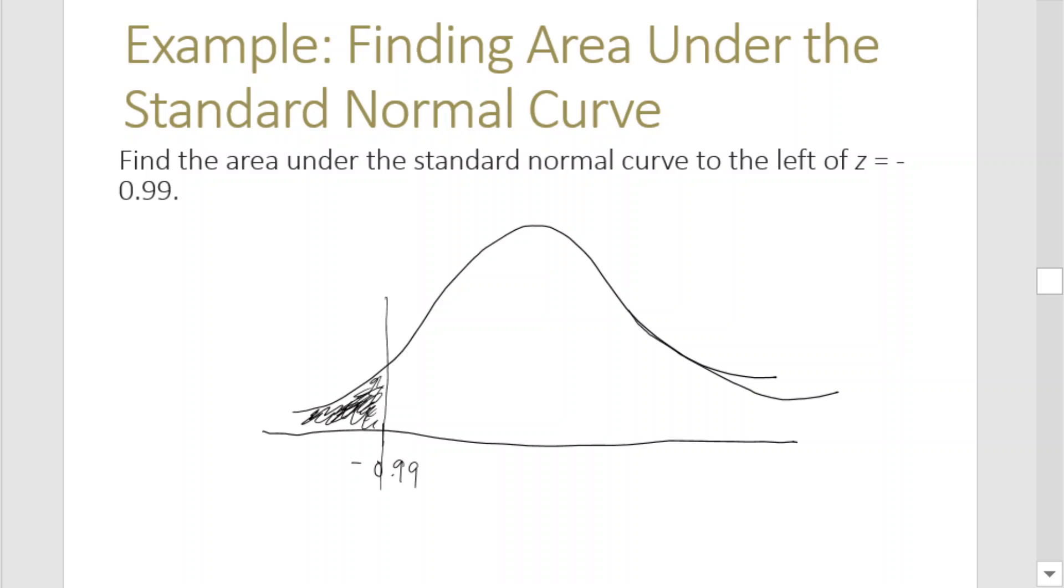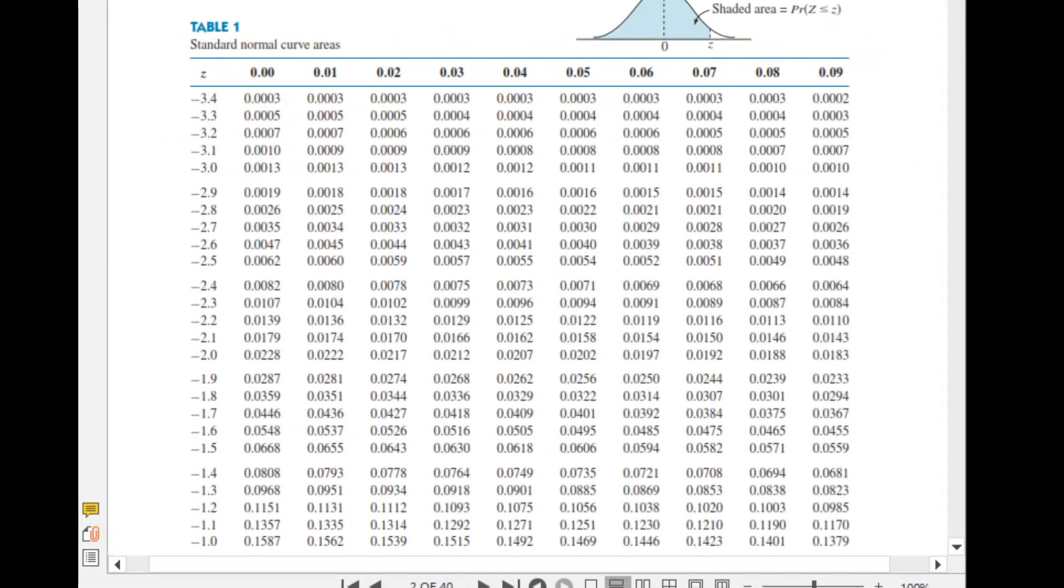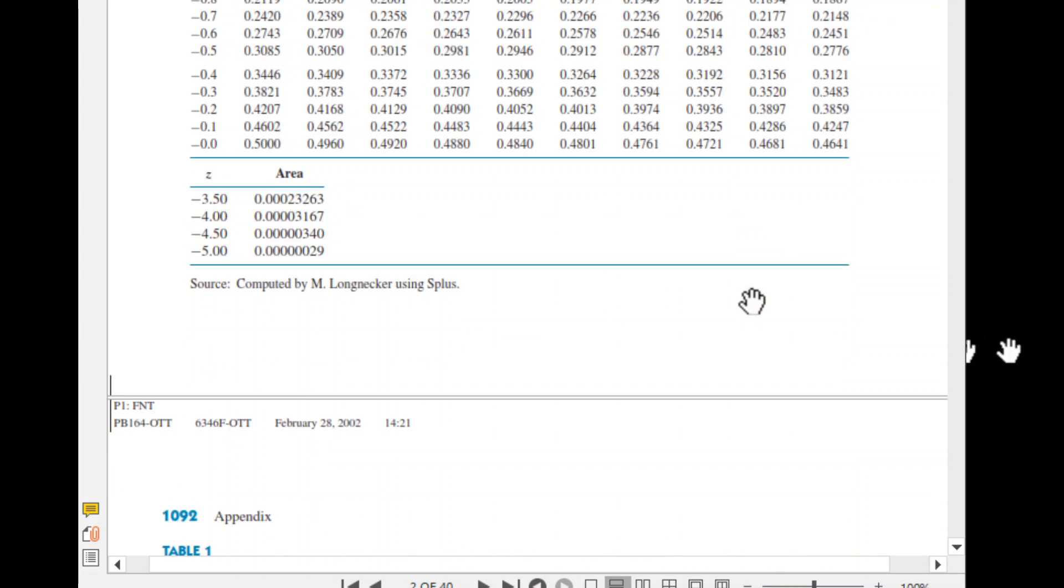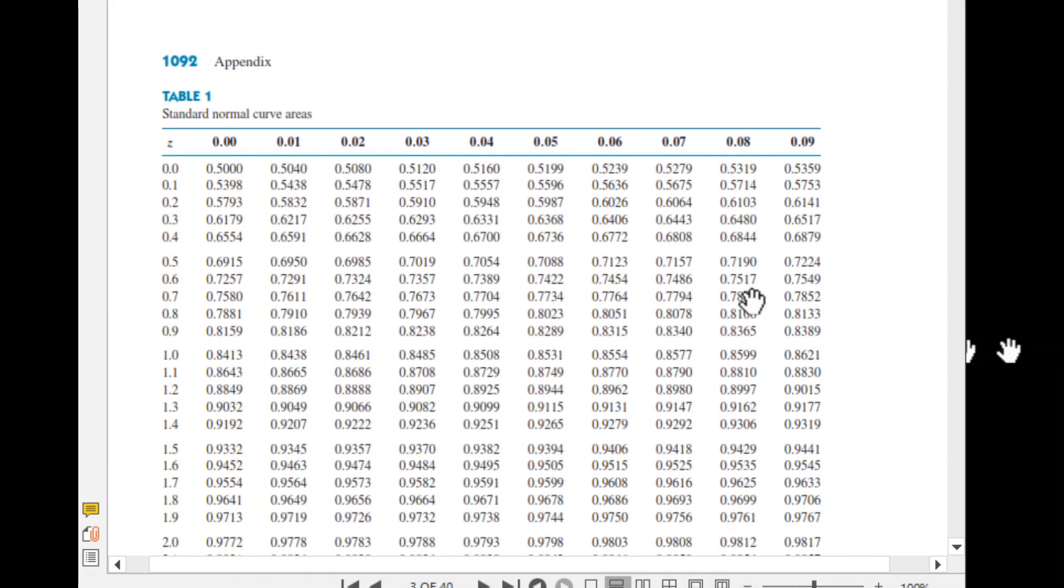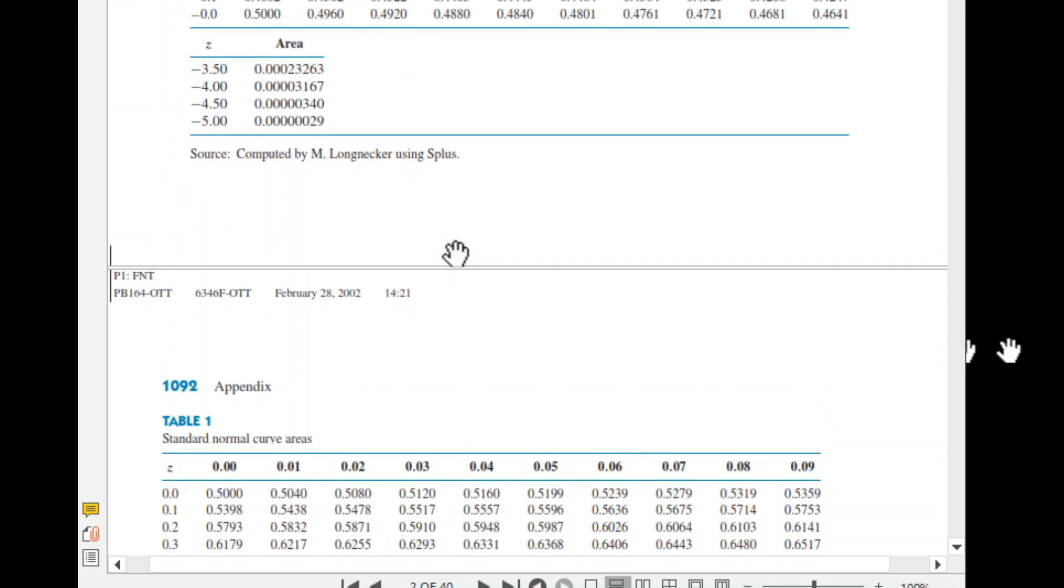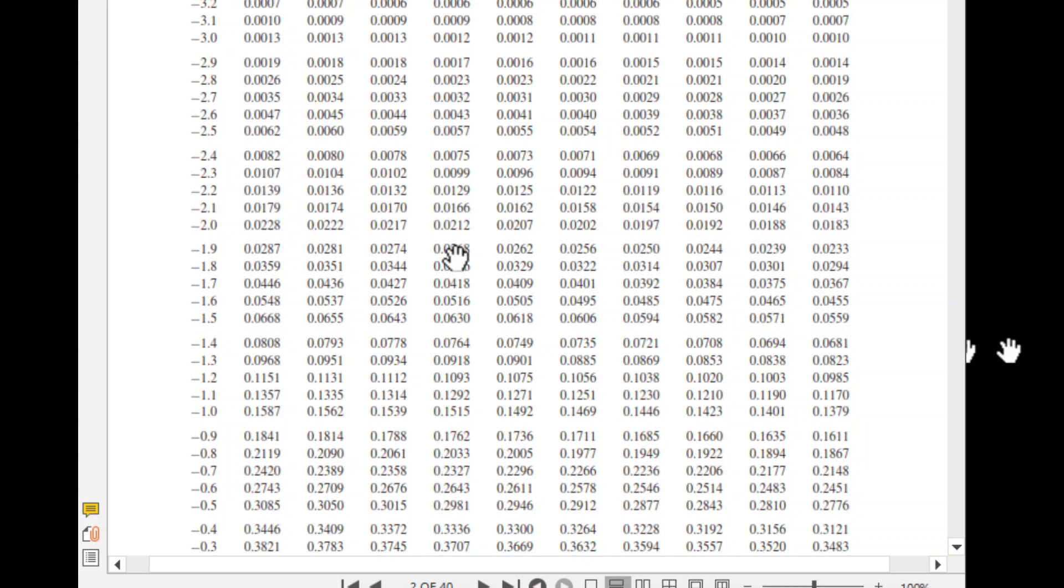So we would be finding the area using the standard normal curve area table as shown in this presentation. We'll look for the z value of negative 0.99. This is the negative standard normal curve table, and we also have the positive standard normal curve areas. Since our given is negative, we'll look at the negative table.